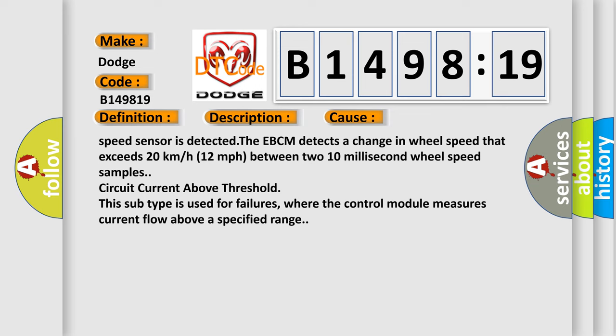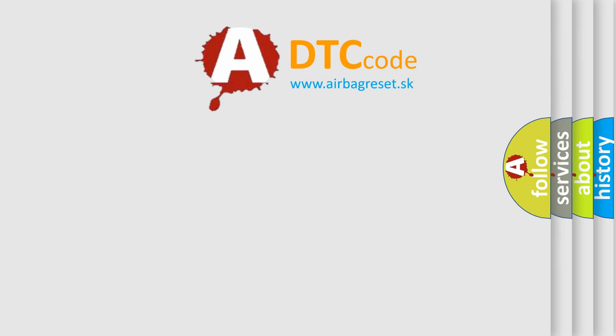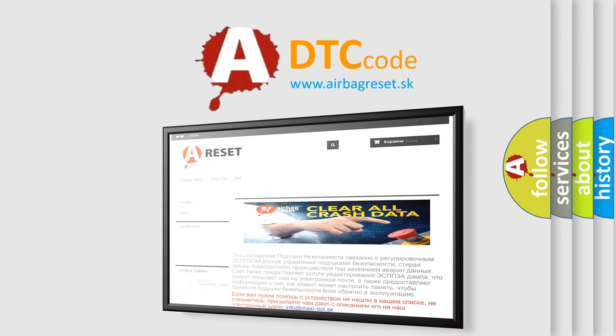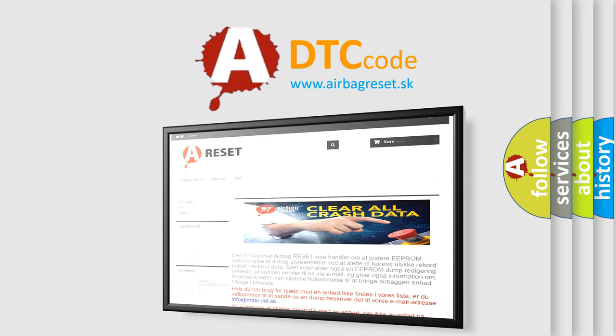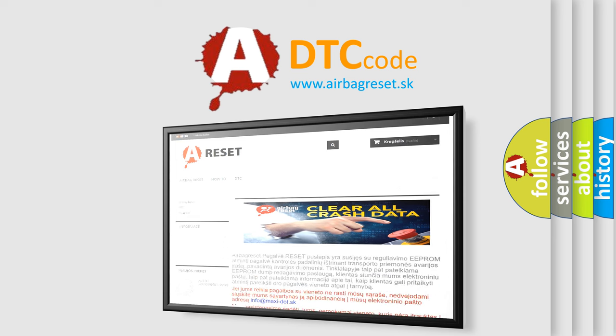Circuit current above threshold. This subtype is used for failures where the control module measures current flow above a specified range. The Airbag Reset website aims to provide information in 52 languages. Thank you for your attention and stay tuned for the next video.